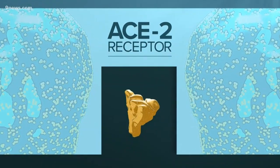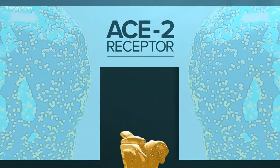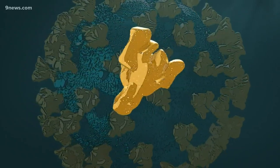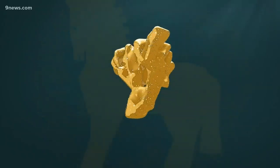The ACE2 receptor, which normally grabs onto proteins and brings some of them into the cell. The spike on this coronavirus looks just like the real deal, but it's a Trojan horse.